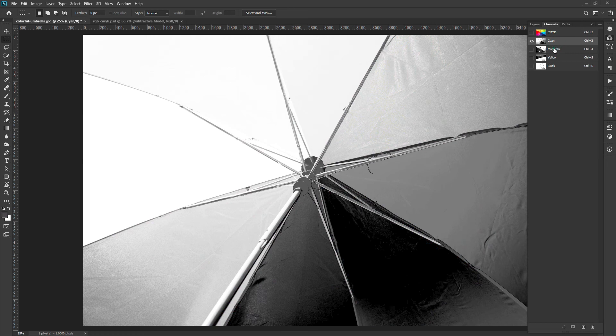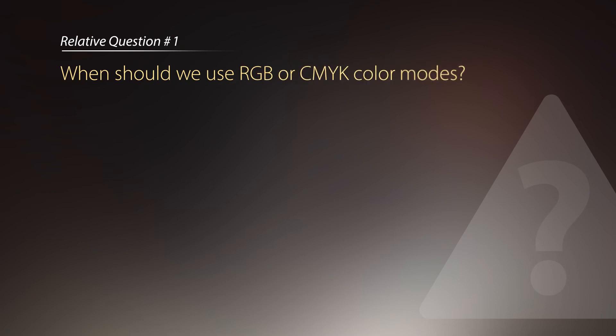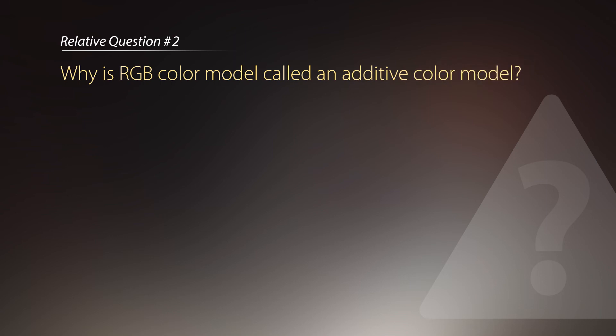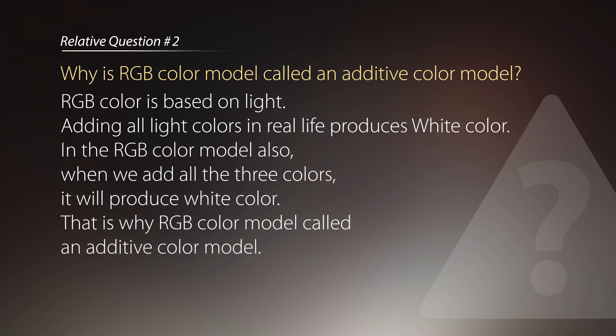These gray channels are interesting to know about image depth. Let's talk about a few relative questions. The first question is: when should we use RGB or CMYK color modes? If we are working with images going to be used for digital screens, we should always use RGB color mode. When working with images for printing purposes, we should use CMYK color mode. Why is RGB called an additive color model? RGB color is based on light. Adding all light colors in real life produces white color, and in the RGB color model, adding all three colors also produces white. That is why the RGB color model is called an additive color model.